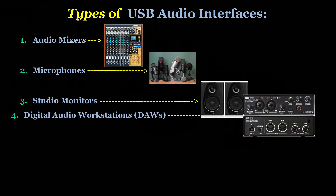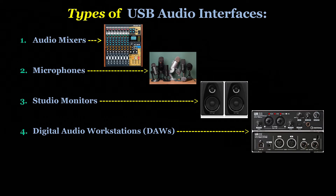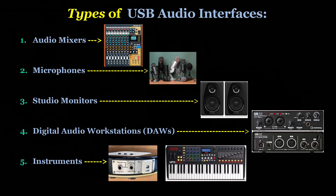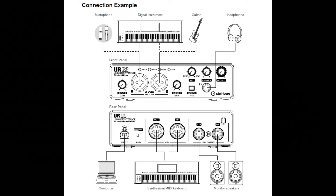Number four: Digital Audio Workstations, or better known as DAWs. USB audio interfaces are often required with DAWs to provide professional-level audio input and output capabilities. If you're not using a USB audio interface with your DAW, then you probably should be. Number five: instruments. Some instruments such as electric guitars and keyboards can be connected to a USB audio interface for high-quality recording and playback. Overall, USB audio interfaces are versatile devices that can be used with a wide range of audio equipment to provide professional audio input and output for your music productions.